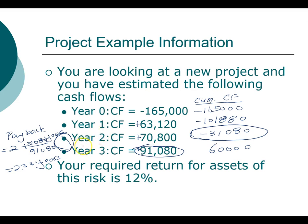Whether to accept or reject this project depends on management and how they feel about the payback period. Based on the net present value rule, this is a valuable project with a positive NPV. It pays itself back in 2.34 years and generates an internal rate of return of 16% — all information that supports accepting this project. This concludes the chapter on capital budgeting. You now have all the methods you need: net present value, the profitability index rule, the internal rate of return, and the payback method.